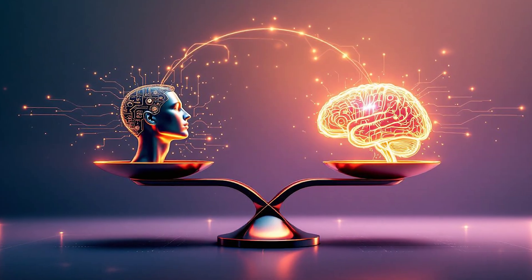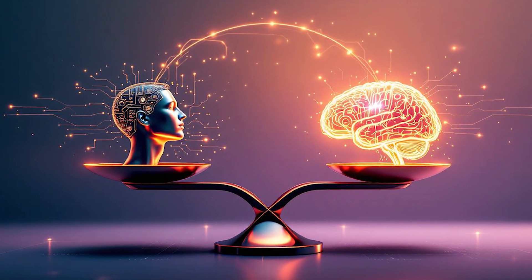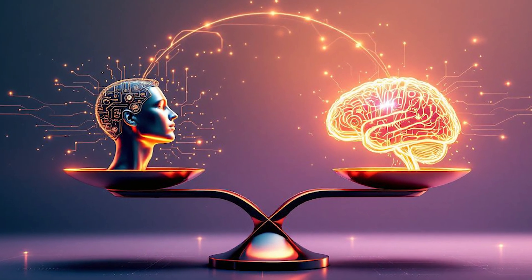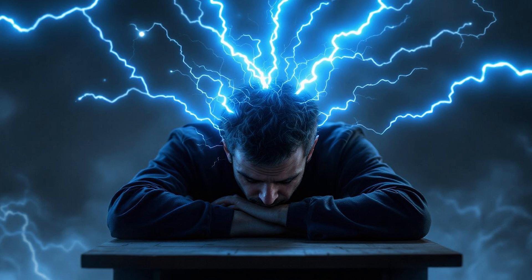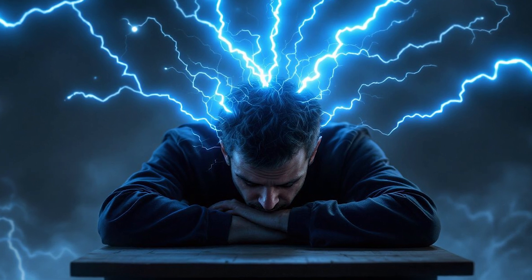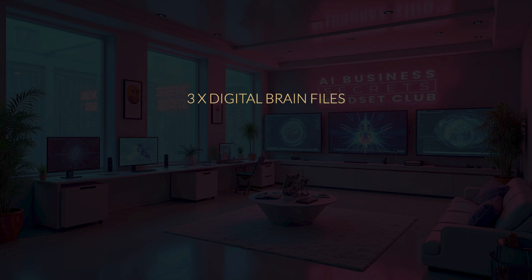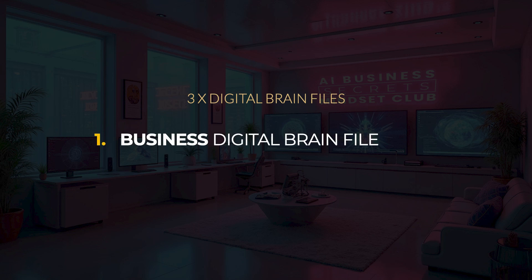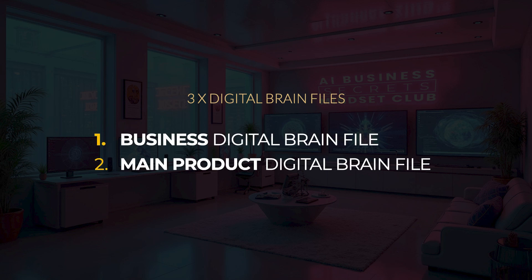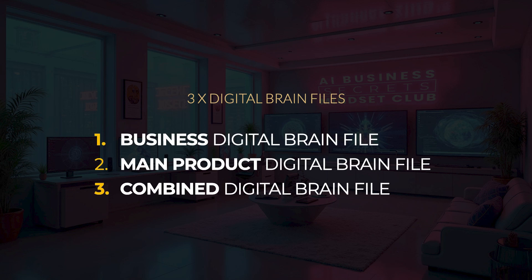Let's start with creating your first digital brain knowledge file. Let's find a nice balance between giving AI just enough valuable information about your business and your products without making our brain hurt too much. This means we'll create three digital brain files — one just for your business, one just for your main product, and a third one that's a combination of those two.